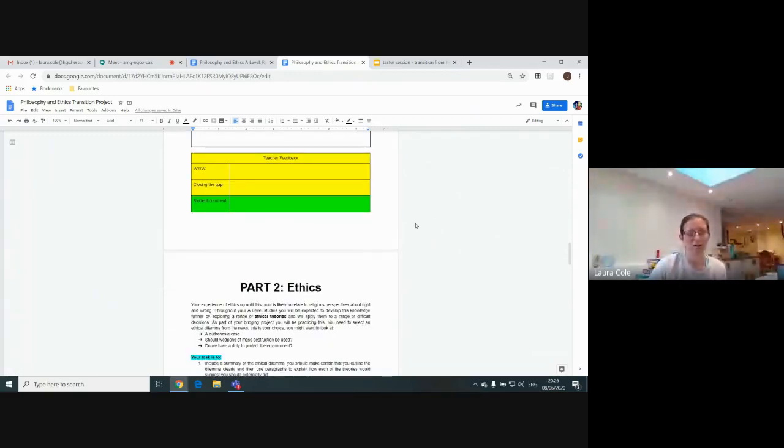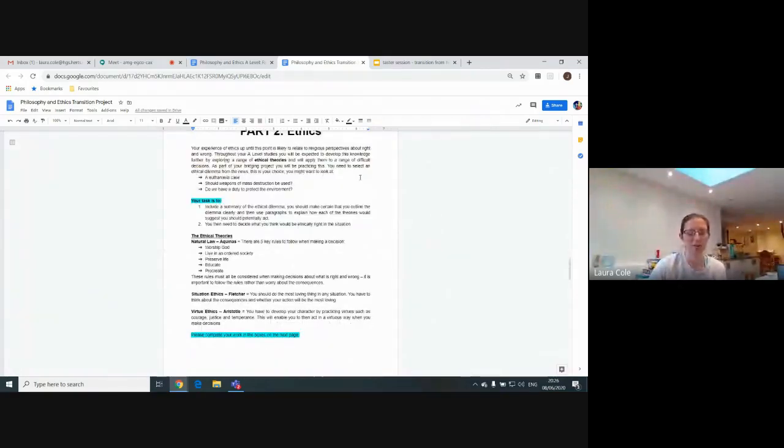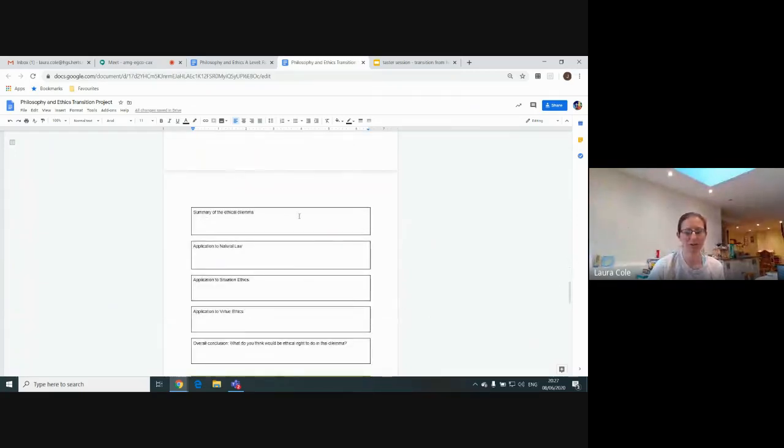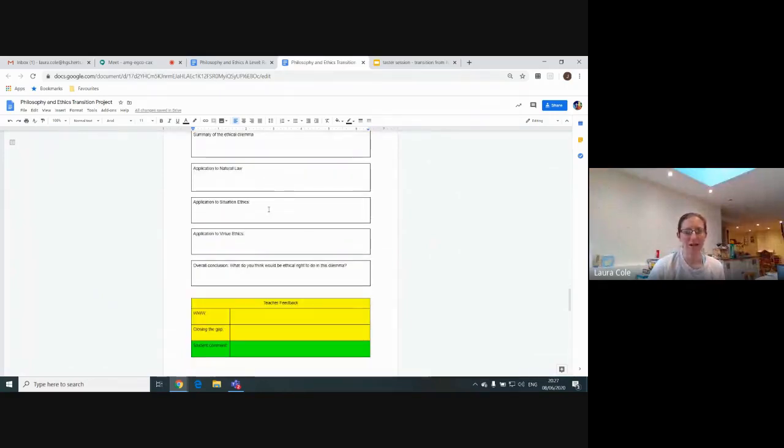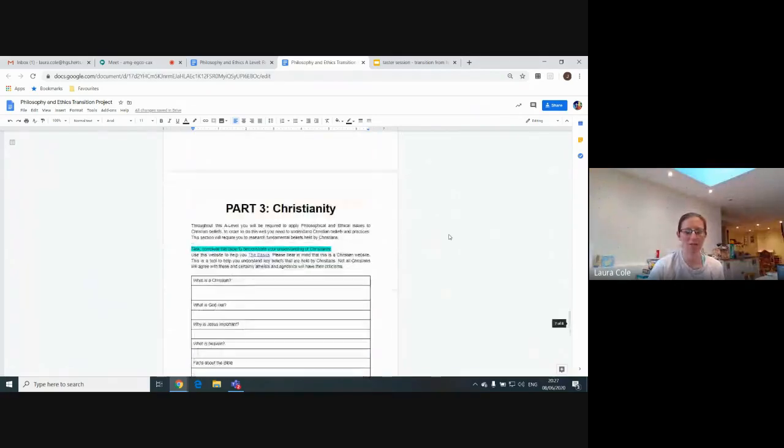The ethics part gives you the opportunity to be a little bit more creative. You need to think of an ethical dilemma, a problem where people have found something to be right and wrong. You have three very short summaries of three key ethical theories we'll look at during the first year. You need to outline your dilemma and then say how each of the theories would respond to it.